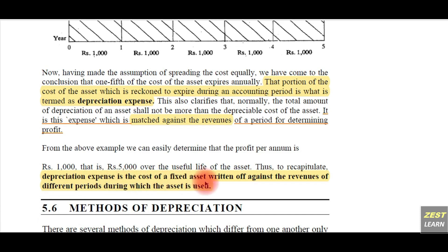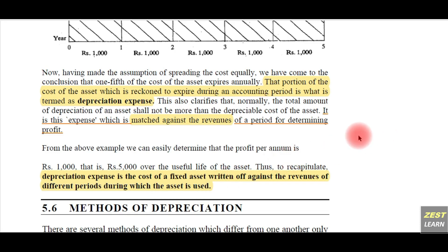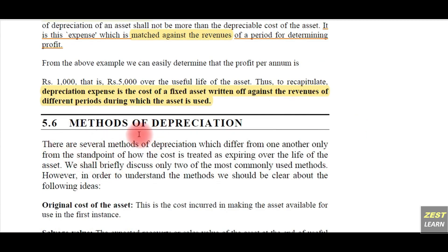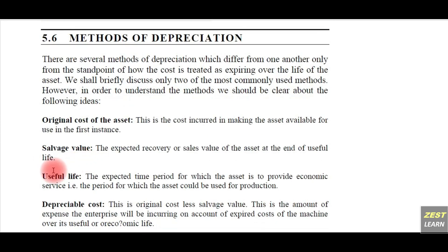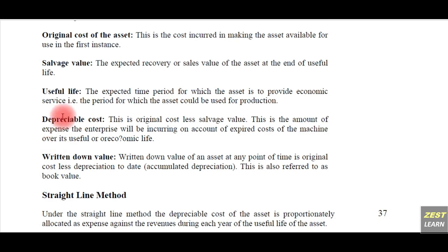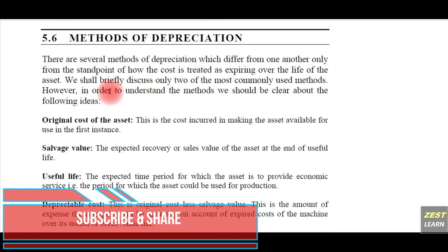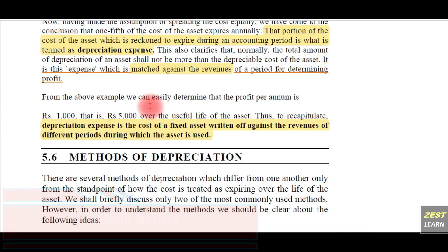Depreciation is the cost of a fixed asset written off against the revenues of different periods during which the asset is used. So these are the two types of indirect expenses: bad debts and depreciation. Bad debt is a loss; depreciation is an expense — both are indirect expenses shown in the profit and loss account. In the next video we will cover different methods of depreciation, like the straight line method, written down value method, and useful life method.